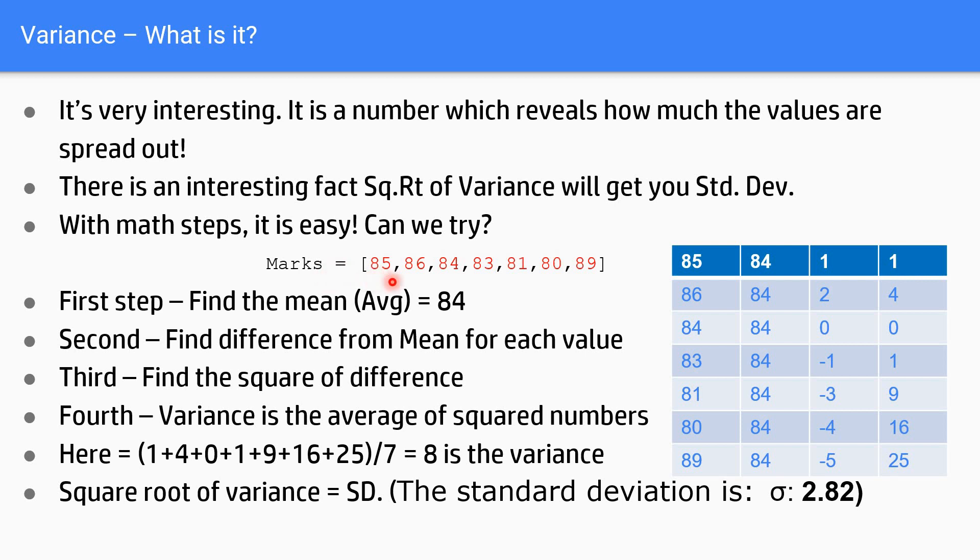I am assuming the values 85, 86, 84, 83, 81, 80 and 89, and we need to calculate the variance of it. How do we do it? First, I have entered the numbers in the table.